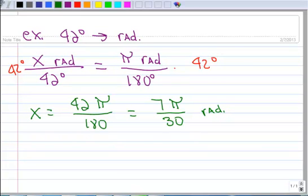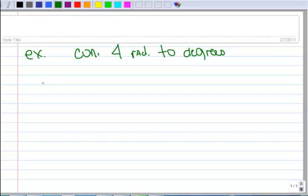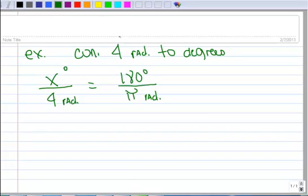Let's do another example. Convert 4 to degrees. See? 4 doesn't have a little degree symbol up there, so it must be considered radians. So degree is unknown, so x degrees is to 4 radians as 180 degrees is to pi radians.